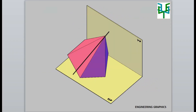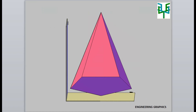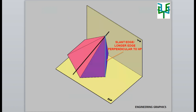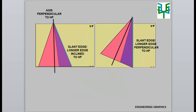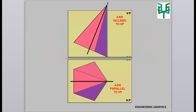In this problem, the pyramid is resting with its base corner — only a point on the HP. One of the longer edges of the pyramid is perpendicular to HP. The longer edges of pyramids are always inclined to its axis. So when the axis is perpendicular to HP, the longer edges will be inclined to HP. Similarly, when the longer edge is perpendicular to HP, the axis will be inclined to HP. Therefore in this case, the axis of the pyramid is inclined to HP and parallel to VP.